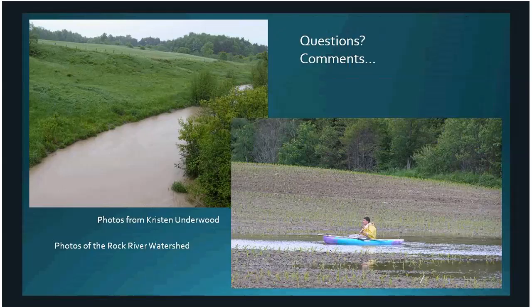Question from audience: How many flights does it take to capture an area like the red block along the Connecticut River, and how long does that take? Answer: I don't know all the details — they do multiple back-and-forth flights and you have to catch the right weather. Essex County was flown in just a few months, which is remarkable given Vermont's weather.